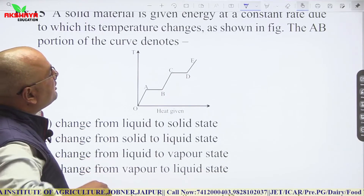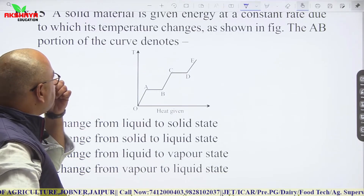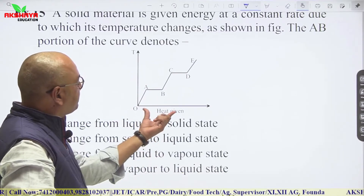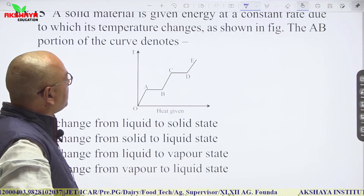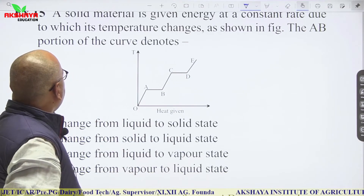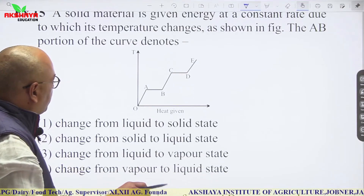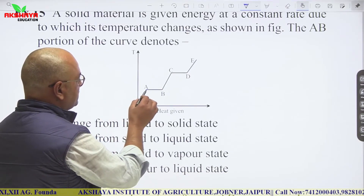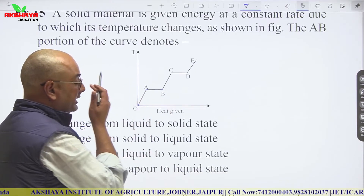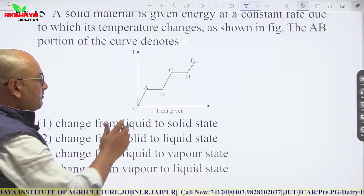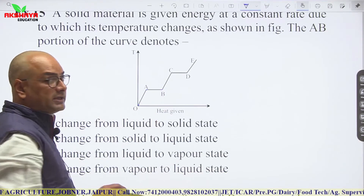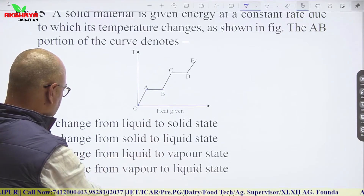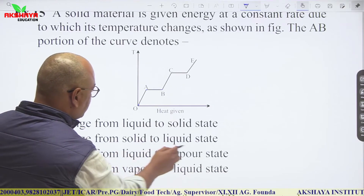A solid material is given energy at a constant rate and its temperature changes. In the AB portion of the temperature-heat curve, temperature remains constant while heat is increasing — this indicates a state change from solid to liquid (melting). So AB represents change from solid to liquid state.